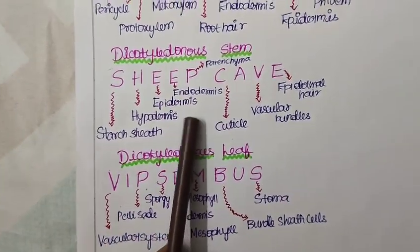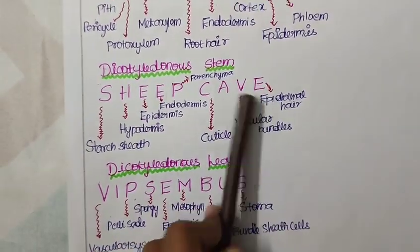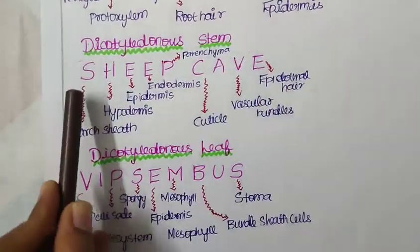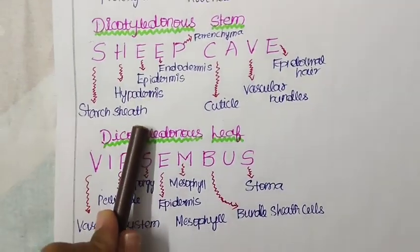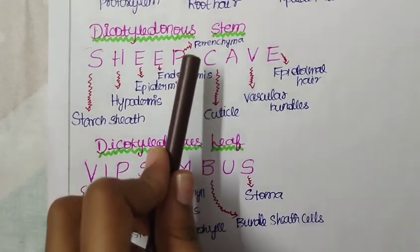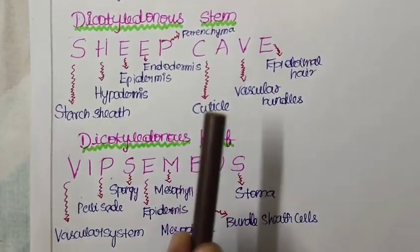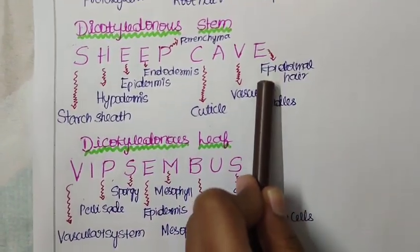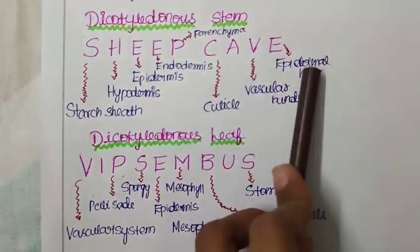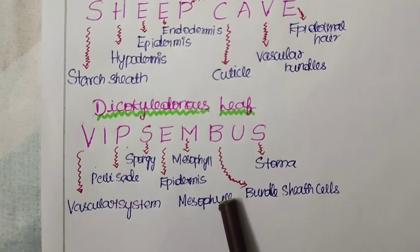Now to talk about the dicot stem. The short trick will be sheep cave. Sheep is living in a cave. Think like that. So sheep cave. S for starch sheath. H for hypodermis. E for epidermis. Another E for endodermis and P for parenchyma, C is for cuticle, V is for vascular bundles and the last E is for epidermal hair. This is an example for dicot stem sheep cave and the last one will be dicot leaf.